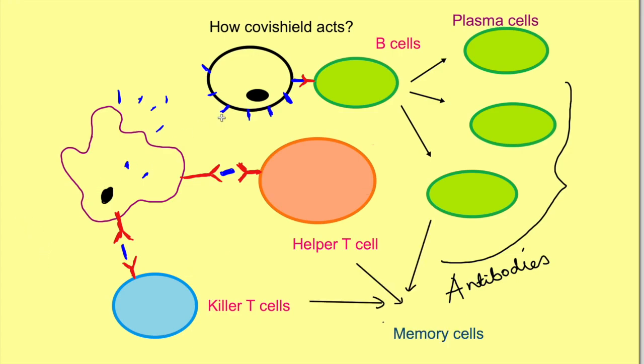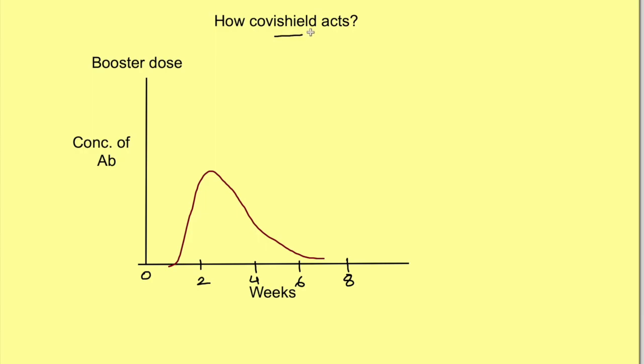The body has a mechanism that once B cells and T cells identify a particular antigen, they create a memory of it. There are memory B cells and memory T cells, such that if there is exposure to the antigen another time, these memory cells can respond faster. This is why multiple doses of vaccines are generally required. In the case of Covishield, the second dose is required around 8 to 12 weeks after the first dose.